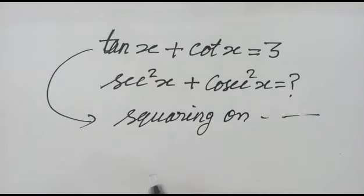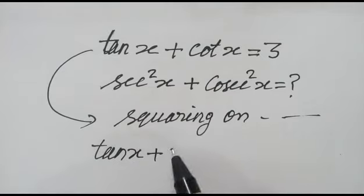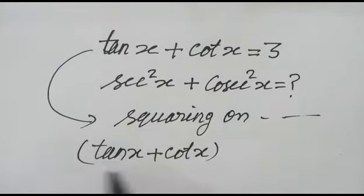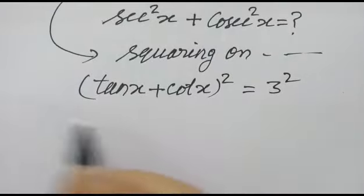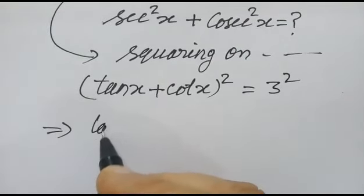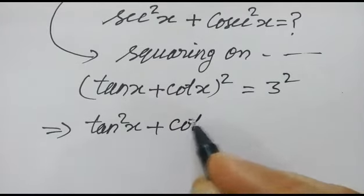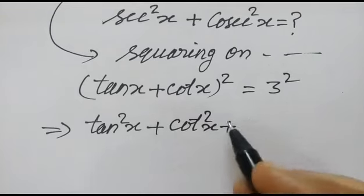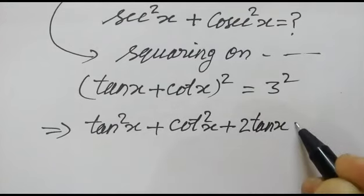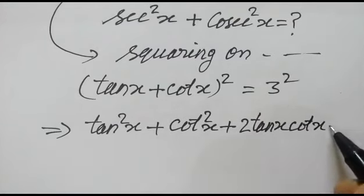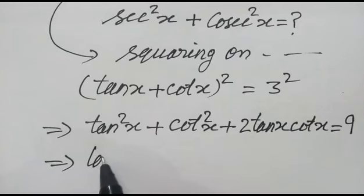Squaring on both the sides, so tan x plus cot x whole square is equal to 3 square. So tan square x plus cot square x plus 2 into tan x cot x is equal to 9.